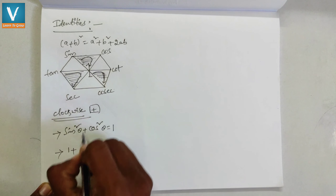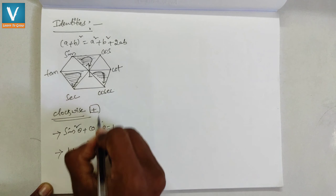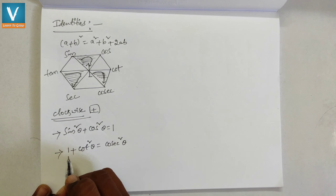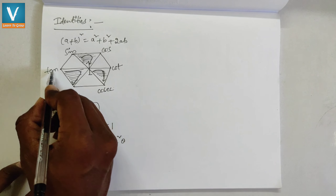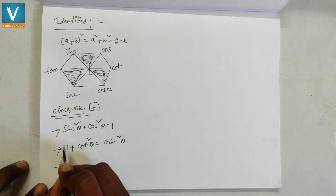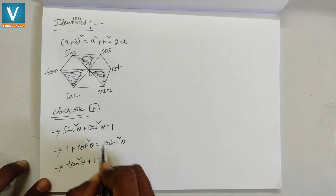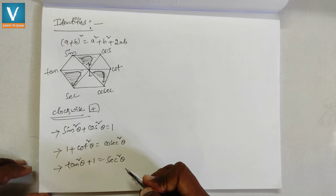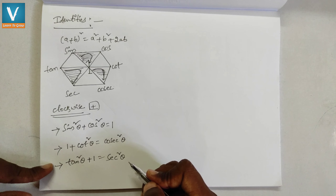The second identity, starting clockwise from 1: 1 + cot²θ = cosec²θ. The third identity, starting clockwise from tan: tan²θ + 1 = sec²θ. These are the three trigonometric identities derived using the clockwise direction on the hexagon.